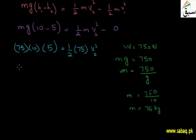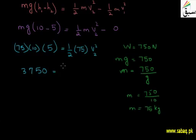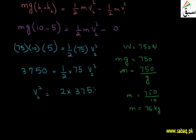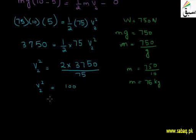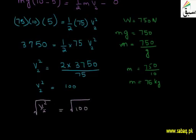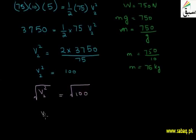So we have 3750 equals one-half times 75 times V2 squared. To isolate V2 squared, multiply both sides by 2 and divide by 75: V2 squared equals 3750 times 2 divided by 75, which equals 100. Taking the square root of both sides, V2 equals 10 meters per second.